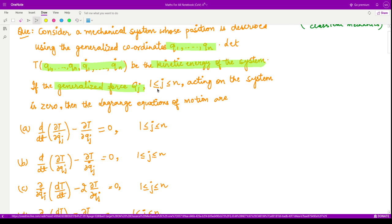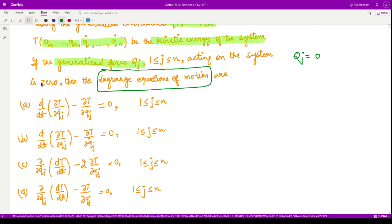Qj is the generalized force acting on the system. If this generalized force Qj equals zero, then what is the Lagrange equation of motion for this system? We have four options given.